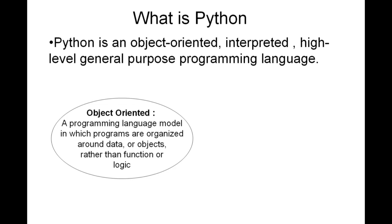So when we say object oriented, basically that is a model in which programs are organized around data or objects. Everything in Python is an object. When we talk about object oriented programming, we create certain classes, we create objects out of them and then we start using them as and where needed. This is typically different from structural programming languages like C, where we keep on writing the language as per the function or logic required.